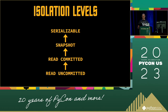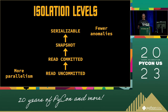These four isolation levels are in order of increasing strength — from the bottom, where there's more parallelism, to the top, where there are fewer anomalies. The higher you go, generally the slower you get and the less parallelism is possible. You have to think about what your application actually needs. And when in doubt, choose the strongest.